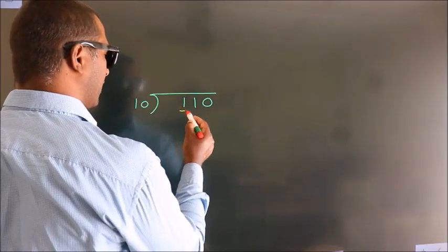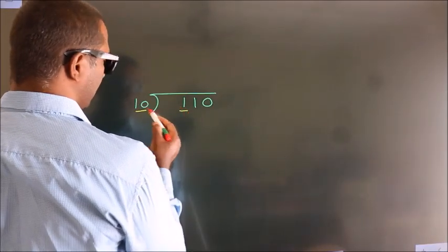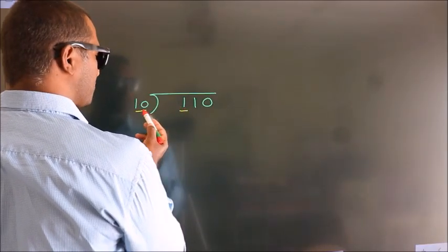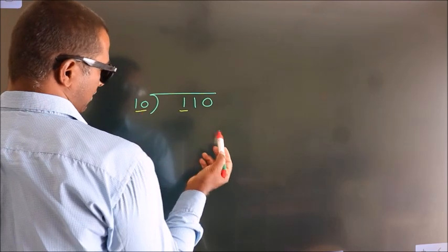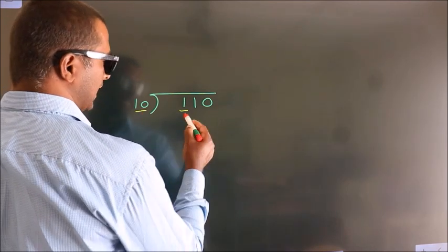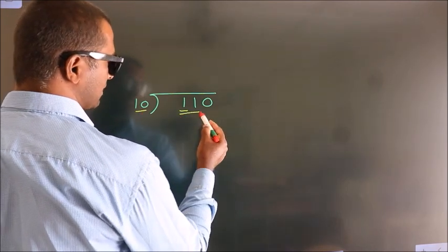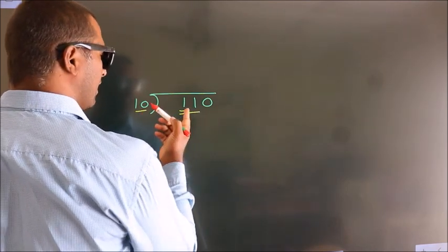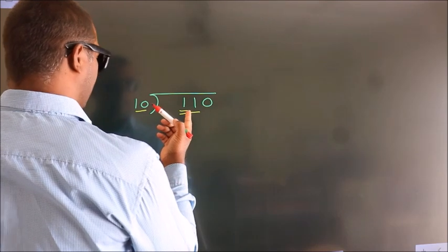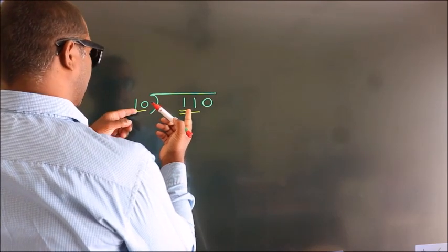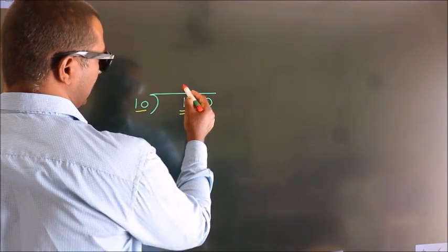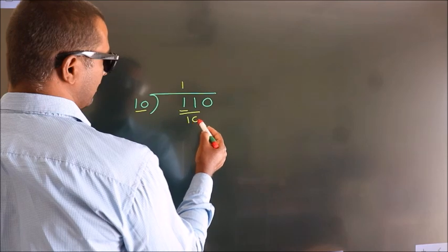Here we have 1, here 10. 1 is smaller than 10, so we should take 2 numbers: 11. A number close to 11 in the 10 table is 10 — 10 once 10.